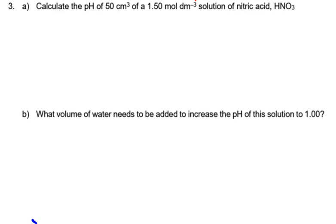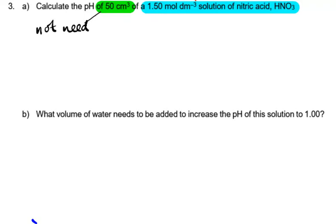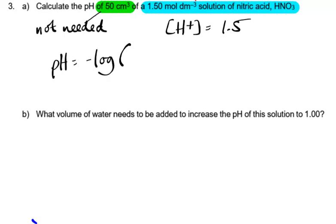In the final question, the first part asks us to work out the pH of 50 cm³ of a 1.5 mol dm⁻³ solution of nitric acid. The volume of the acid is not needed — it doesn't matter whether we have a thimble or a bathtub full; it will have the same pH. It's a monoprotic acid, so [H⁺] = 1.5 mol dm⁻³, and pH = −log(1.5) = −0.18 to two decimal places.